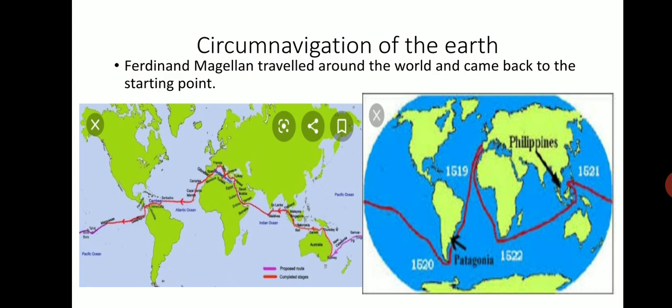Circumnavigation of the Earth. Magellan traveled around the world and came back to the starting point. He started from Europe, took the western direction reaching the southern part of South America, then moved to the Pacific Ocean reaching Indonesia, Philippines, then Indian Ocean, the southern tip of Africa, and back to Europe. This proved that Earth is spherical in shape or geoid.